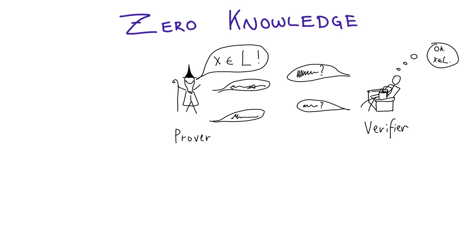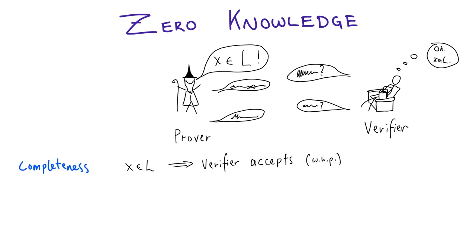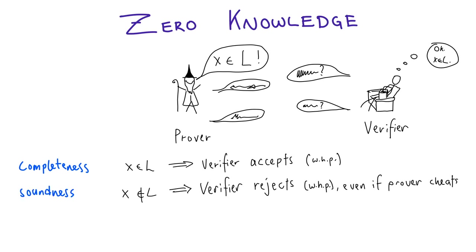To begin, just a brief reminder about what a zero knowledge proof is. We have a prover and a verifier, and the prover is trying to convince the efficient verifier that this statement is true — X is in L. They interact, and we need three properties. We need completeness: if the statement is true, then the verifier accepts with high probability. We need soundness: if the statement is not true, then the verifier will reject with high probability, even if the prover is behaving completely arbitrarily.